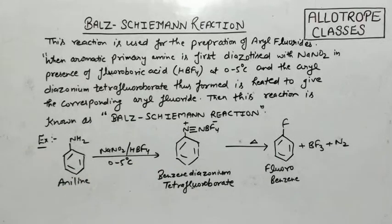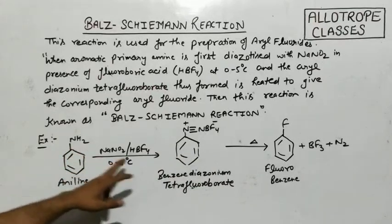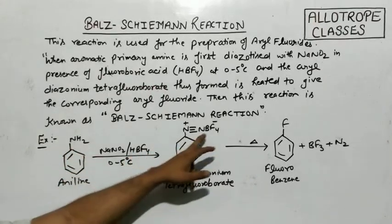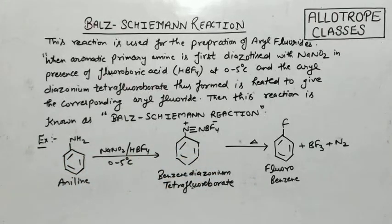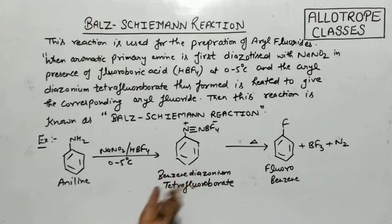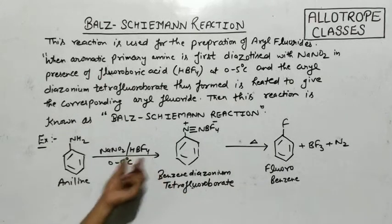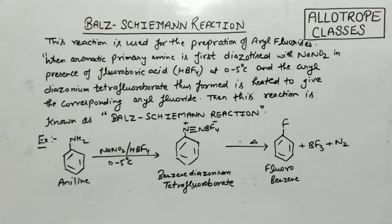On carrying out this reaction, we get a compound called benzene diazonium tetrafluoroborate — here, hydrogen is displaced and BF4 negative becomes present. This compound is called benzene diazonium tetrafluoroborate, similar to how benzene diazonium chloride is formed — this is what we get when we react with fluoroboric acid.